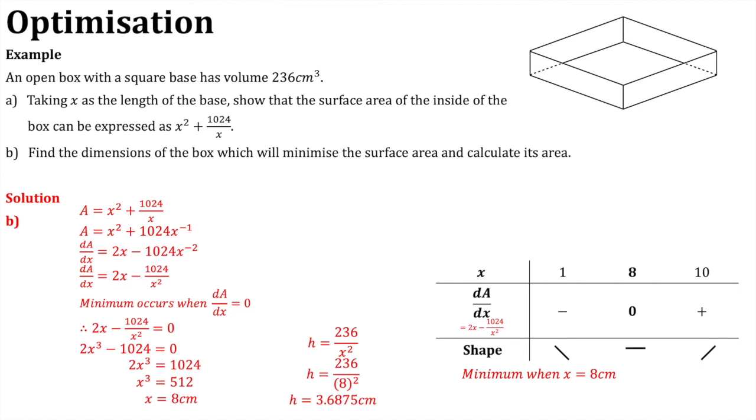Now, it asks us to also calculate the surface area. So, when x is equal to 8, we can take the expression for the surface area, x squared plus 1024 over x. And we can substitute 8 in. So, 8 squared plus 1024 over 8 is equal to 192 square centimetres. And that is our final answer. Just now would be a good time to pause the video before the screen goes blank and copy this down in your notes.